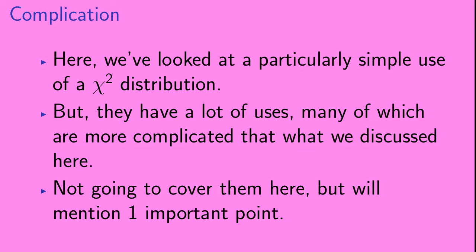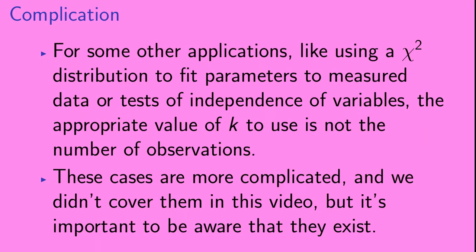We did say we would mention a brief complication. Here we've looked at a particularly simple use of a chi-squared distribution, but they have many uses that are more complicated. We won't cover them here, but one important point: for some applications — like fitting parameters to measured data or doing tests of independence of variables — the appropriate value of k to use is not the number of observations. These cases are more complicated, but it is important to be aware that these situations exist.